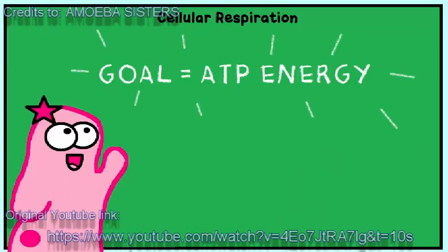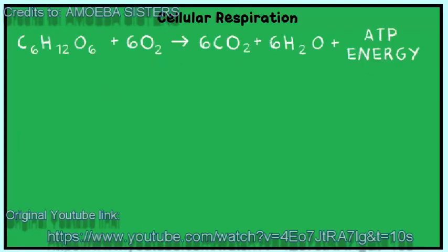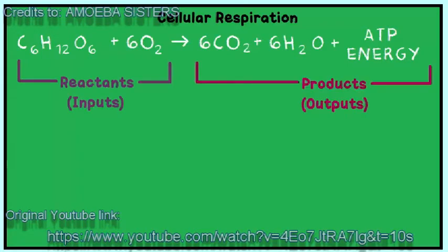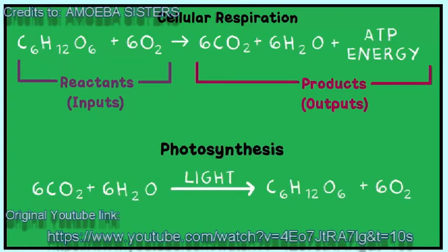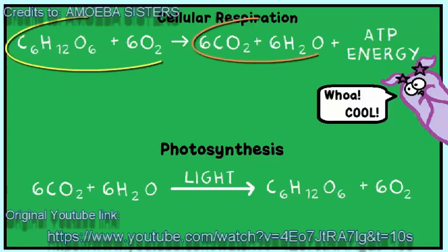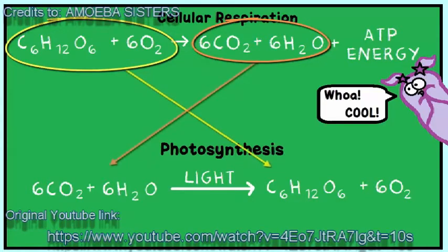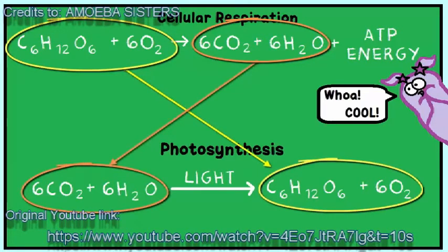Remember we are trying to make ATP energy. Let's take a look at this formula. Remember that reactants, the inputs, are on the left side of the arrow. And products, the outputs, are on the right side of the arrow. This formula looks remarkably similar to photosynthesis — just look how the reactants and the products seem to be on different sides. This isn't really a coincidence.